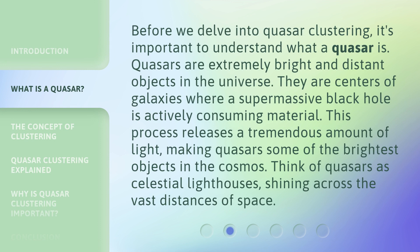Before we delve into quasar clustering, it's important to understand what a quasar is. Quasars are extremely bright and distant objects in the universe. They are centers of galaxies where a supermassive black hole is actively consuming material. This process releases a tremendous amount of light, making quasars some of the brightest objects in the cosmos. Think of quasars as celestial lighthouses, shining across the vast distances of space.